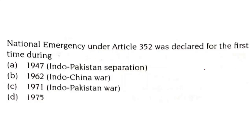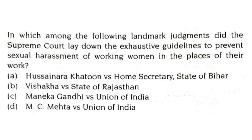Which of the following bodies in India is not a constitutional body? The Central Vigilance Commission, Central Information Commission, Planning Commission of India, or Second Administrative Reforms Commission? The Planning Commission of India is not a constitutional body. National emergency under Article 352 was declared for the first time during the 1962 Indo-China war.